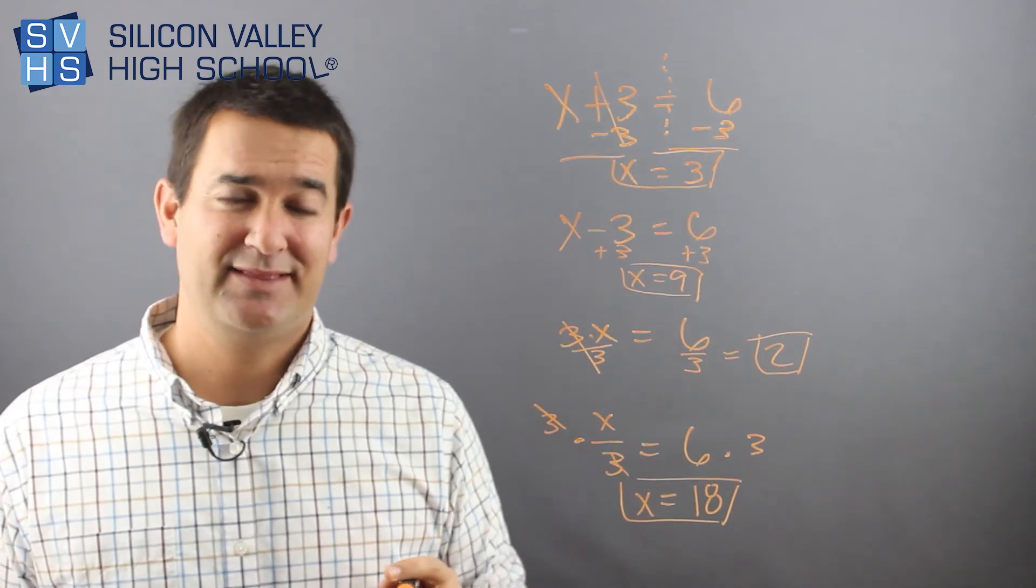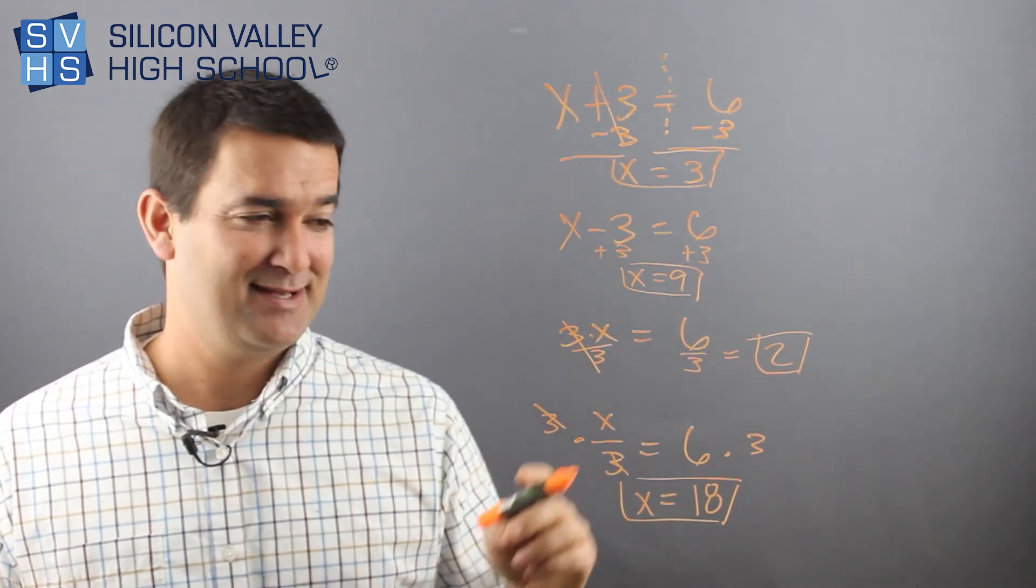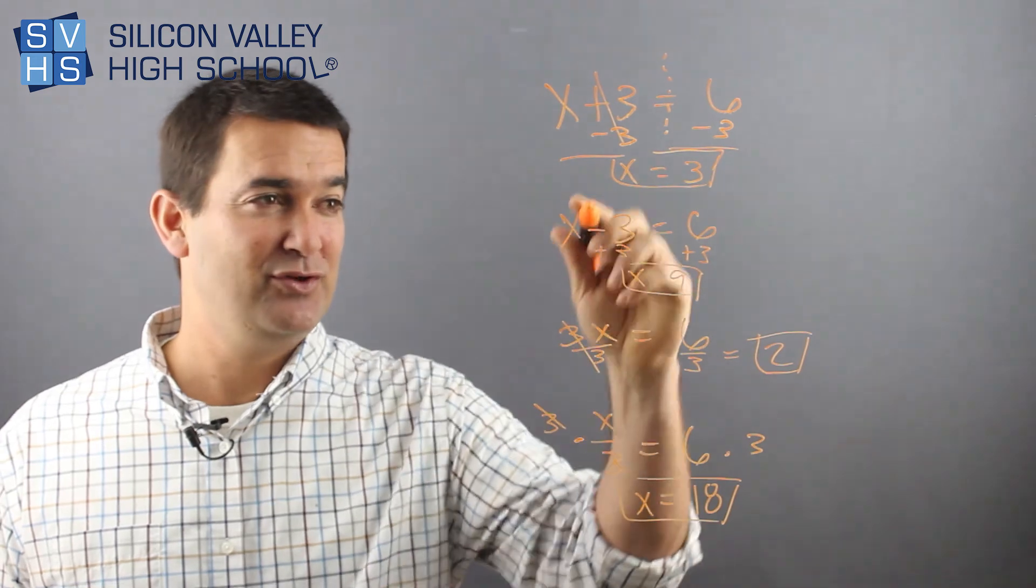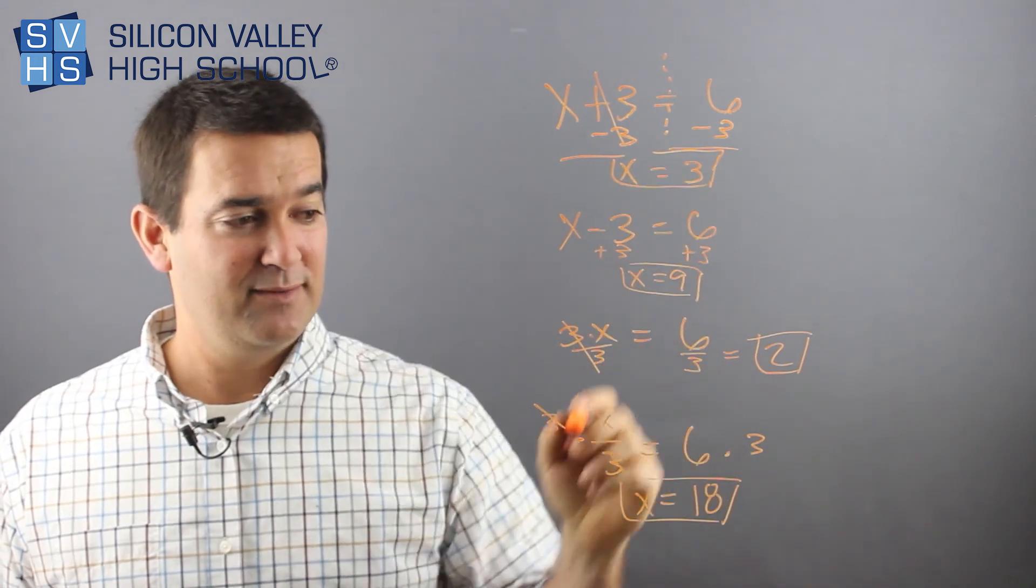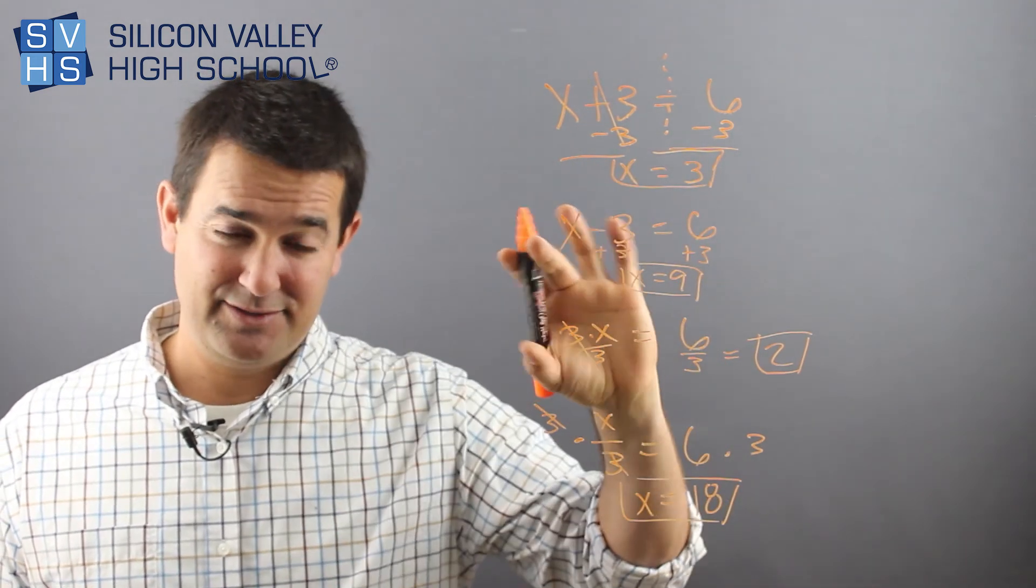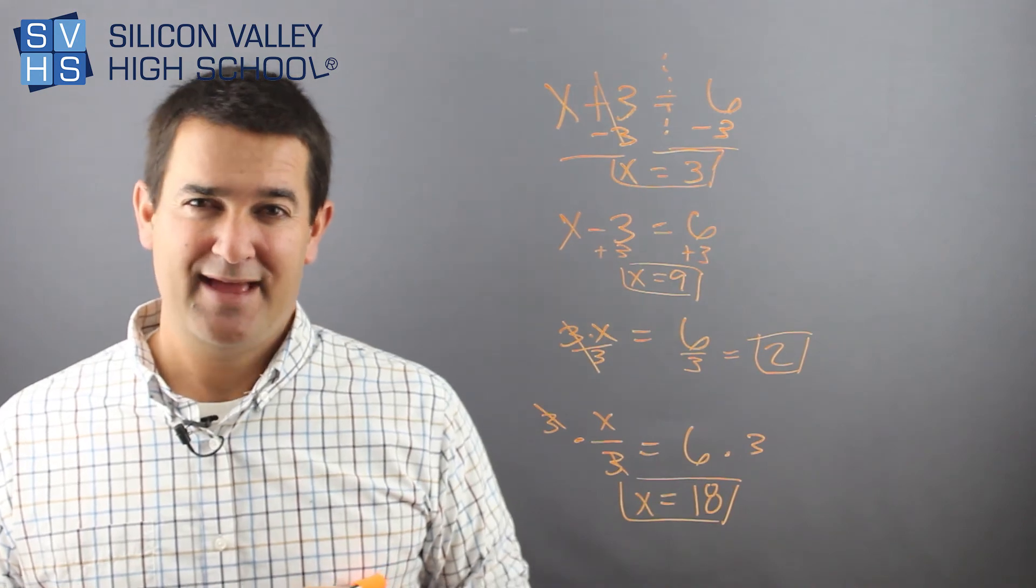The reason it's a bad call is that in the long run, you're going to get to some that are really hard to do in your head. So I think you should just do the four basic properties and then do the opposite to get x alone. That's it.